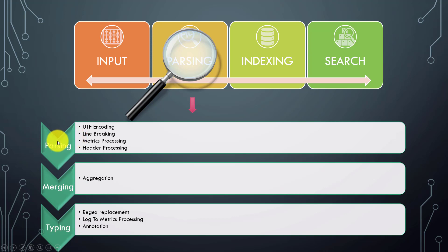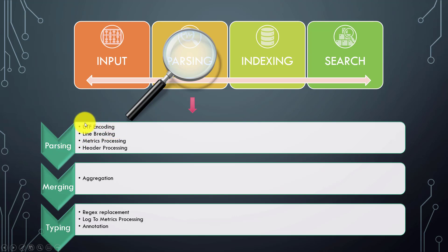In the parsing phase, a lot of things happen. Splunk basically determines what kind of encoding a file is using, and based on your props.conf settings, it processes that file. For example, if you have events coming in as Japanese language, those events are also processed by Splunk so they will be written as-is in the Splunk index. These kinds of processings are done at the parsing phase when we do the UTF-8 encoding.